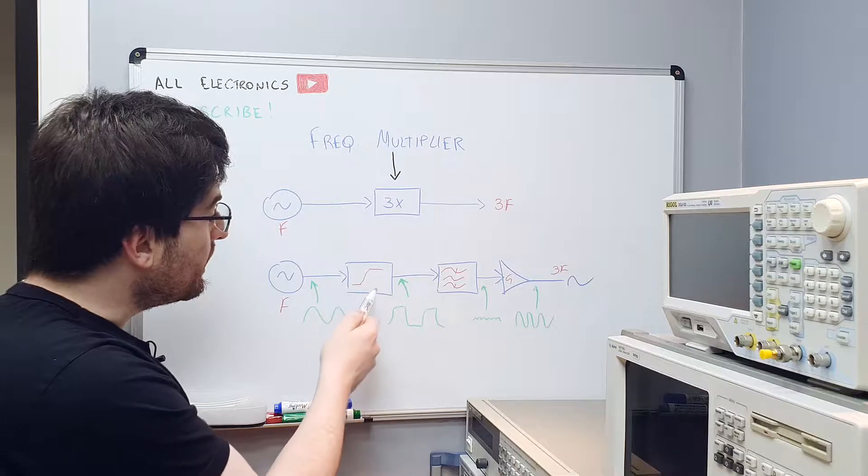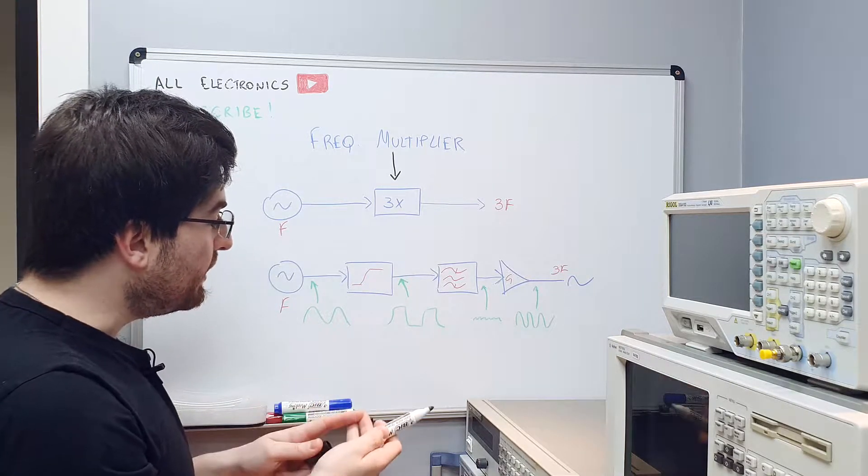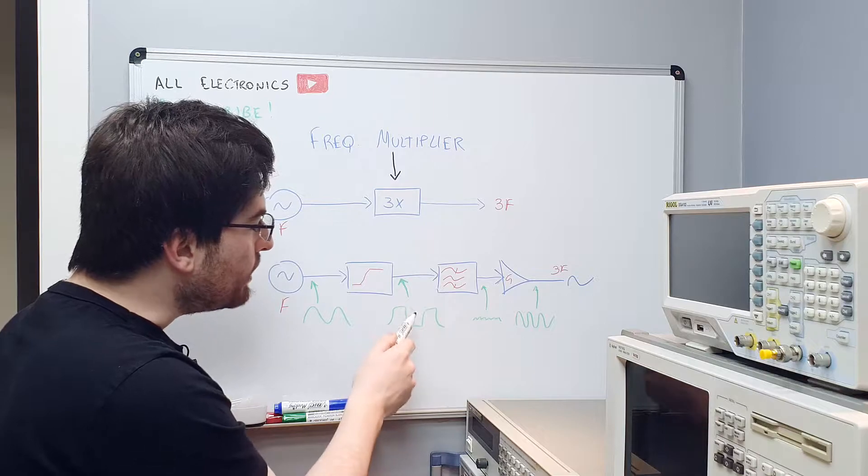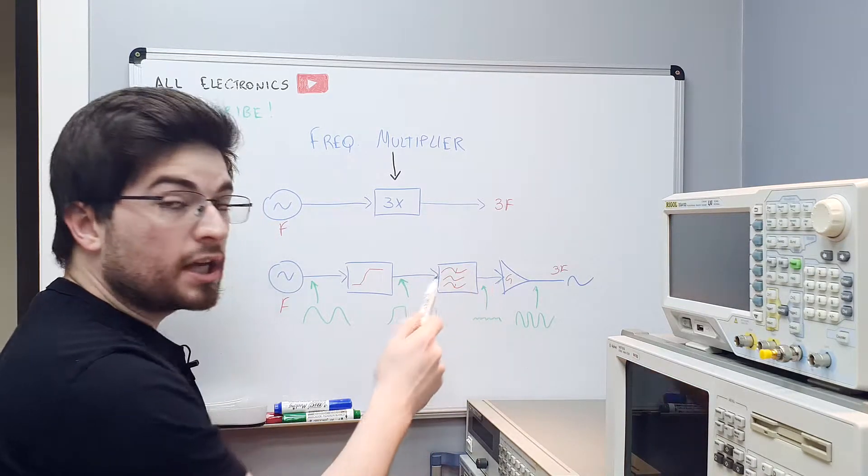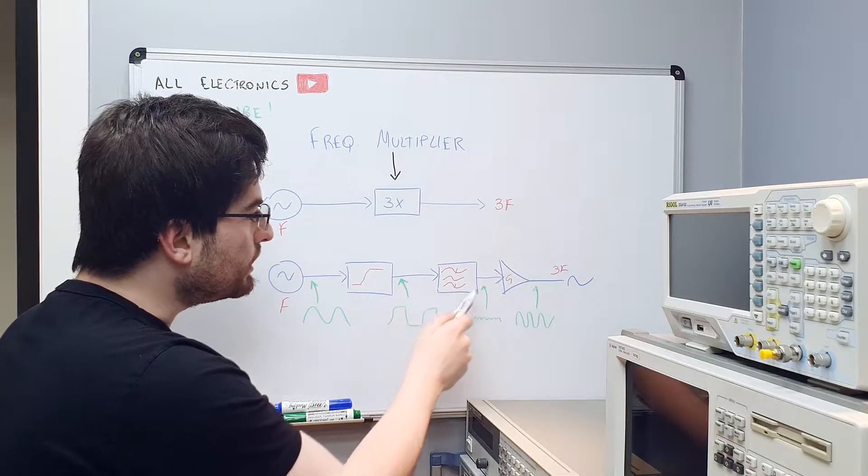So here, with odd harmonic distortion, we have the third, the fifth, the seventh harmonic of the signal. Now we can bandpass this signal here to only pass the harmonic we desire. So here we're going to multiply the signal by three, so we're going to filter the signal only in the third harmonic.